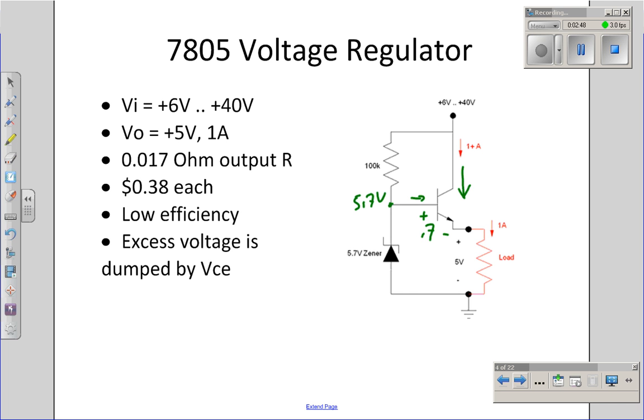The disadvantage of this type of regulator is it's fairly inefficient. Suppose, for example, my load is drawing 1 amp. In that case, it will have essentially 1 amp flowing all the way through that circuit. If the load is 5 volts, the remaining voltage, say 1 amp at a 40 volt source, goes across the transistor. The transistor is dumping the excess voltage, essentially dumping the excess power.